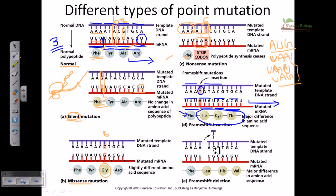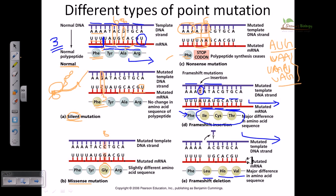The fifth type is also a frameshift mutation, but here it is a deletion. Just as with insertion, deleting one nucleotide will similarly change all downstream nucleotide sequences and protein sequence formation, leading to the production of a malfunctioning or undesired protein. These are the different types of point mutations, and I hope this helps. Thank you.